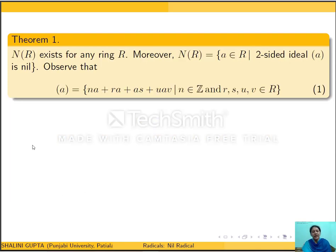The question of whether nil radical of a given ring exists has the answer yes: for any ring R, nil radical exists. Moreover, it is given by the set n(R) = { a ∈ R : the two-sided ideal generated by a is a nil ideal }, that is, every element of the two-sided ideal generated by a is nilpotent. To prove this, we need to show that this set is a two-sided ideal and is the largest two-sided ideal satisfying the nil property.